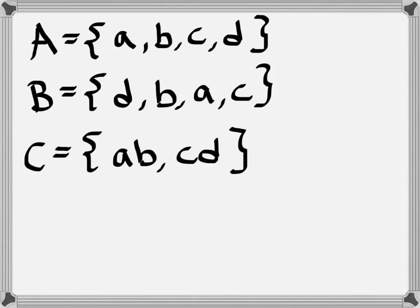Set A consists of the elements a, b, c, and d. Set B consists of the elements d, b, a, and c, while set C consists of the elements ab and cd. So we can check our understanding very quickly about sets. I could say set A and B both have four elements, while set C only has two elements because I see those two elements separated by a comma. The elements in C, one element is ab, and the second element is cd.